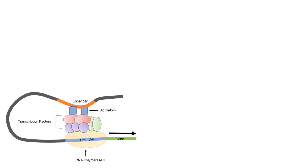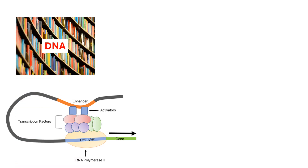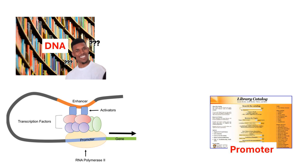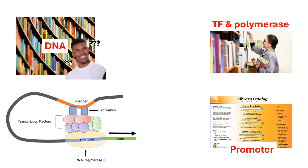Let's talk about how our DNA gets its instructions out to the rest of the cell. Imagine DNA as a big library full of books. Each book has instructions for making different things our body needs, but how do we know which book to read and when? That's where promoter and enhancer regions come into play. Think of promoter regions as the library's catalog system — special areas right at the start of a book or gene. They tell the librarians, which represent our transcription factors and RNA polymerase, to start reading here, beginning the process of copying the gene into mRNA.